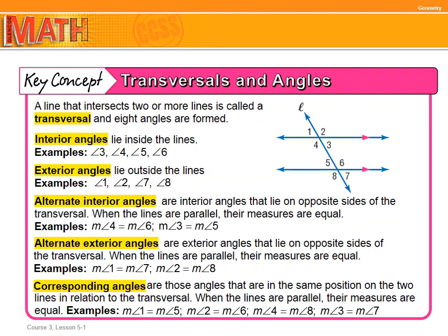Transversals and angles: a line that intersects two or more lines is called a transversal. In this case, it is this diagonal line that you see — that is the transversal. Interior angles lie inside the lines. In this example, we are looking at angles three, four, five, and six. They are interior angles — they are inside both of the lines.